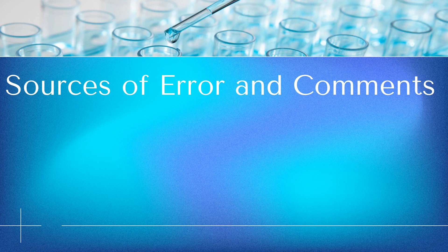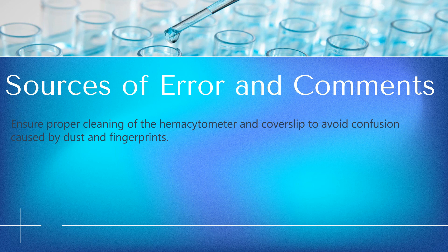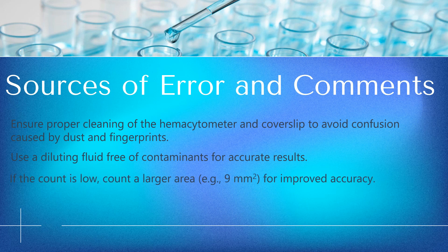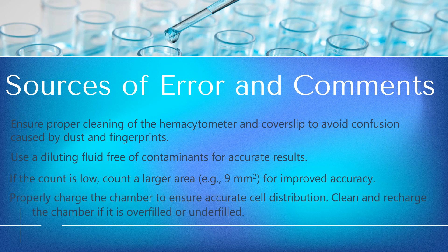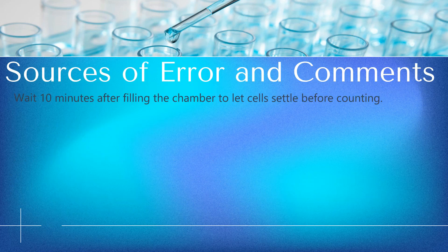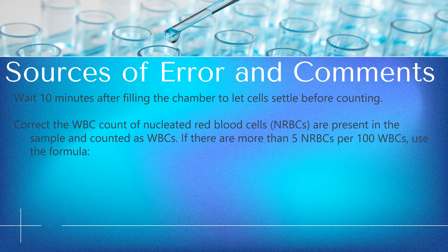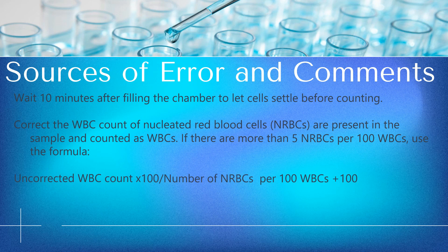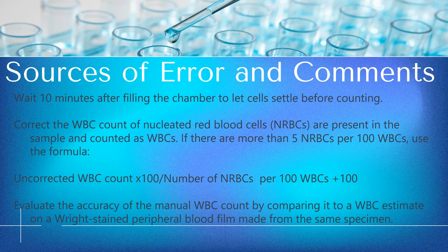Sources of Error: Ensure proper cleaning of the hemocytometer and coverslip to avoid confusion from dust and fingerprints. Use a diluting fluid free of contaminants. If the count is low, count a larger area for improved accuracy. Properly charge the chamber and clean and recharge if overfilled or underfilled. Wait 10 minutes after filling for cells to settle. Correct the WBC count if nucleated red blood cells (NRBCs) are present; if there are more than 5 NRBCs per 100 WBCs, use the formula: uncorrected WBC count × 100 ÷ (NRBCs per 100 WBCs + 100). Evaluate accuracy by comparing to a WBC estimate on a Wright-stained peripheral blood film.